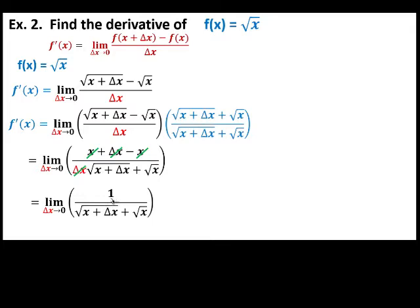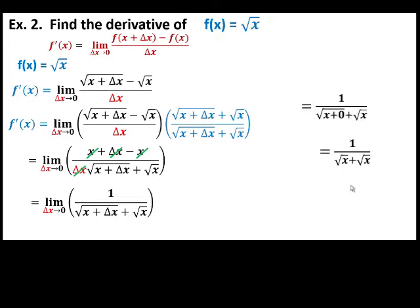We can now evaluate the limit of this function as delta x approaches 0, or replace delta x with 0. Then simplify and combine similar terms. So this is now the derivative of this function. Its derivative is 1 over 2 square root of x.